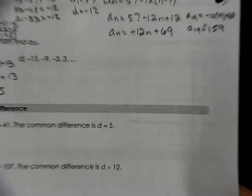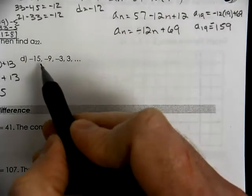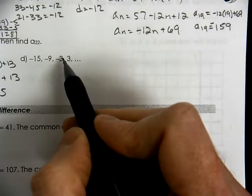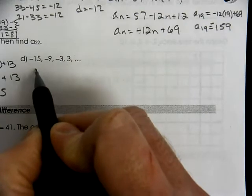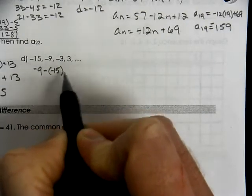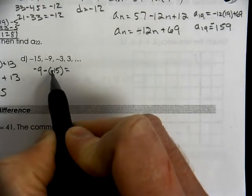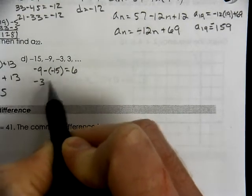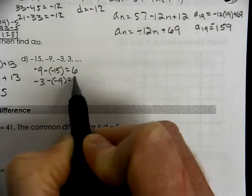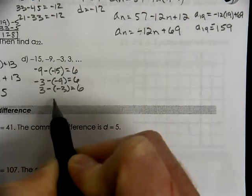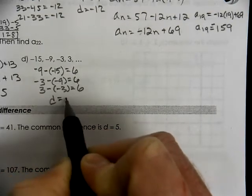We look at our next example. We have to determine what pattern that we're using here. And we see that if we take a term minus the one before it, that's negative 9 plus 15 is going to be 6. Negative 3 minus a negative 9 is still 6. And 3 minus a negative 3, which is 6. So our common difference is 6.